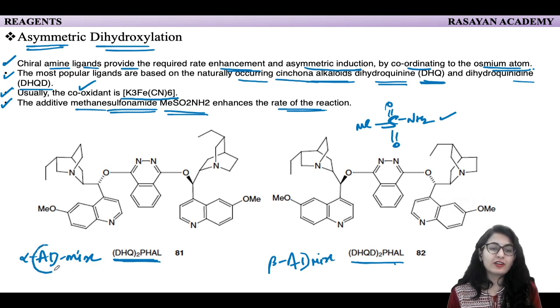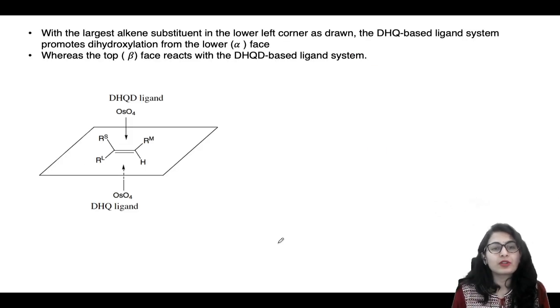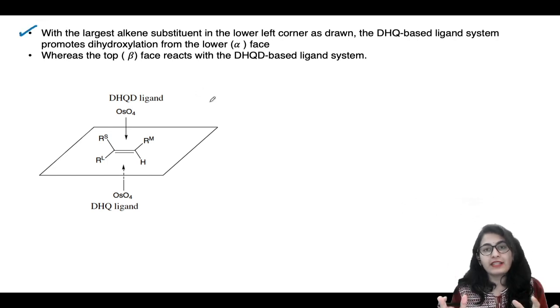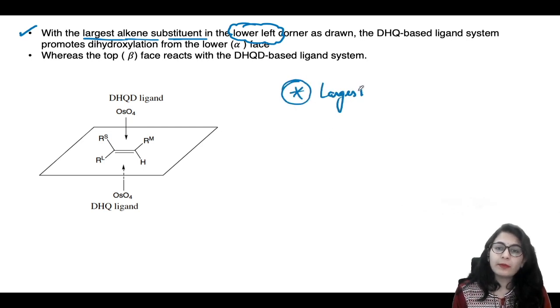They will give you addition to the alkene on the alpha and beta faces. You have to arrange the alkene in a proper conformation so we can do the asymmetric synthesis easily. There's a shortcut: arrange the largest alkene substituent in the lower left corner—triple L, just remember it. Lower left corner means the largest group on the left hand side and the lower side.